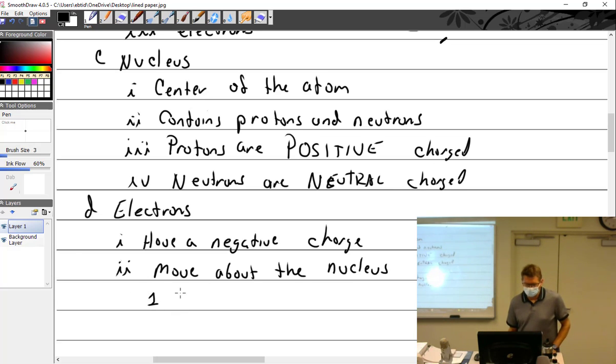Electrons. All right. All right. The number. So I'll say the number of protons, and thus the number of electrons, can be determined by the periodic table of elements, which we are not going to go over.